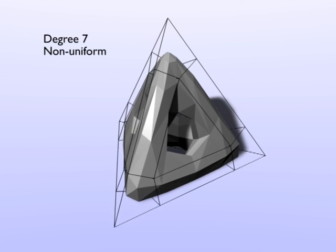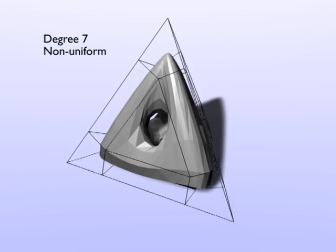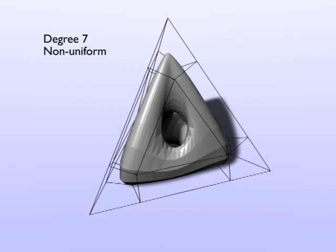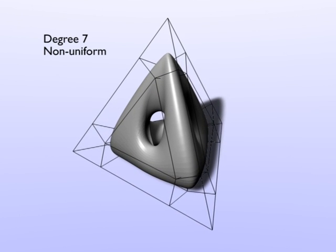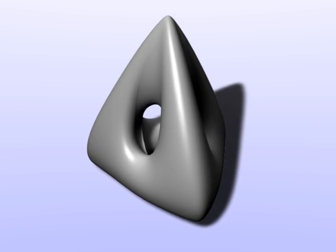The first part of our paper gives the subdivision rules that form the basis of our method. But using the rules naively, subdividing every knot interval at its midpoint, creates folds around extraordinary points.